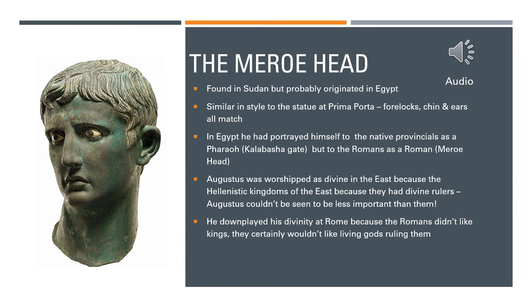In Egypt, Augustus had portrayed himself to the native provincials as a pharaoh, but at Meroe there are a number of Roman citizens living there, and so he is portraying himself to those Roman citizens as a Roman in the Meroe Head. Augustus is worshipped as divine in the eastern provinces because the Hellenistic kingdoms of the East have divine rulers. Augustus couldn't be seen to be less important than the Hellenistic rulers of the East, so he has to be worshipped as a deity in the eastern provinces.